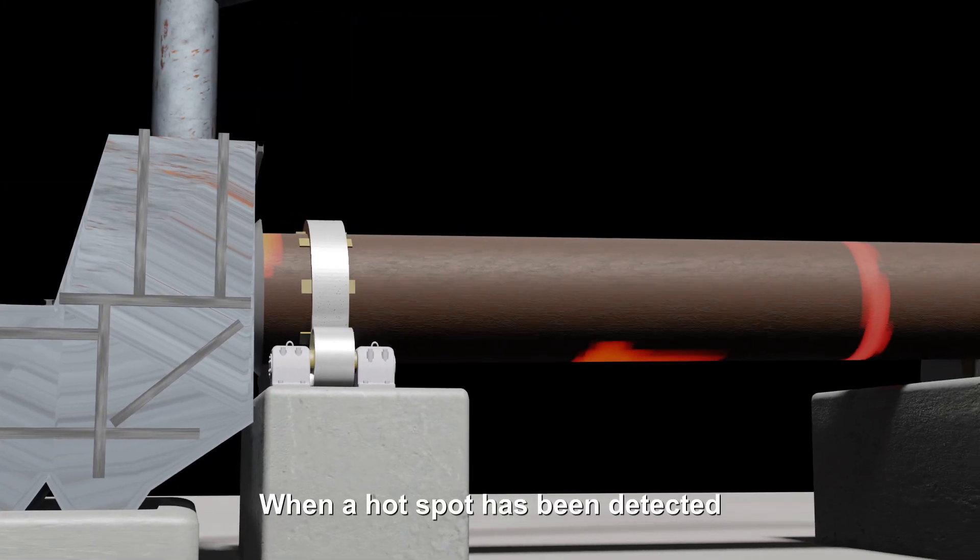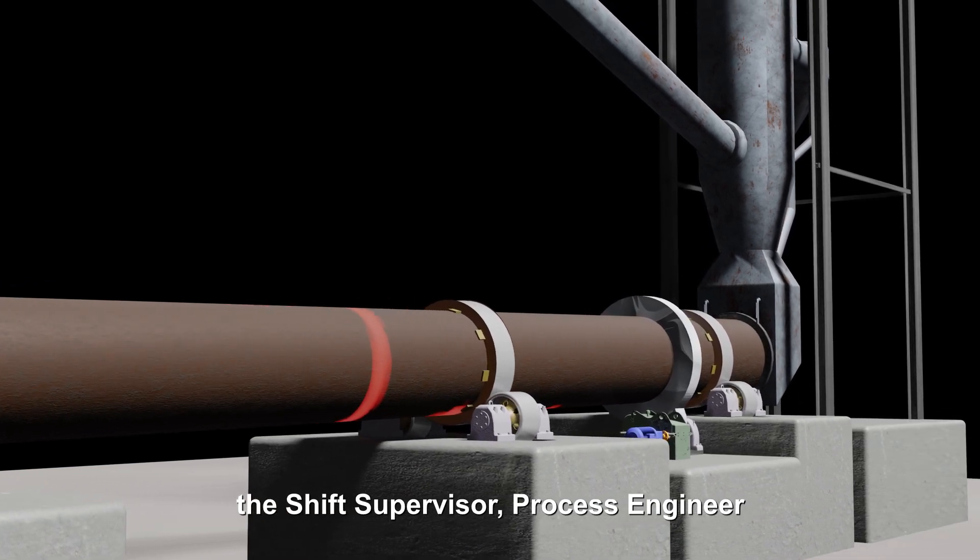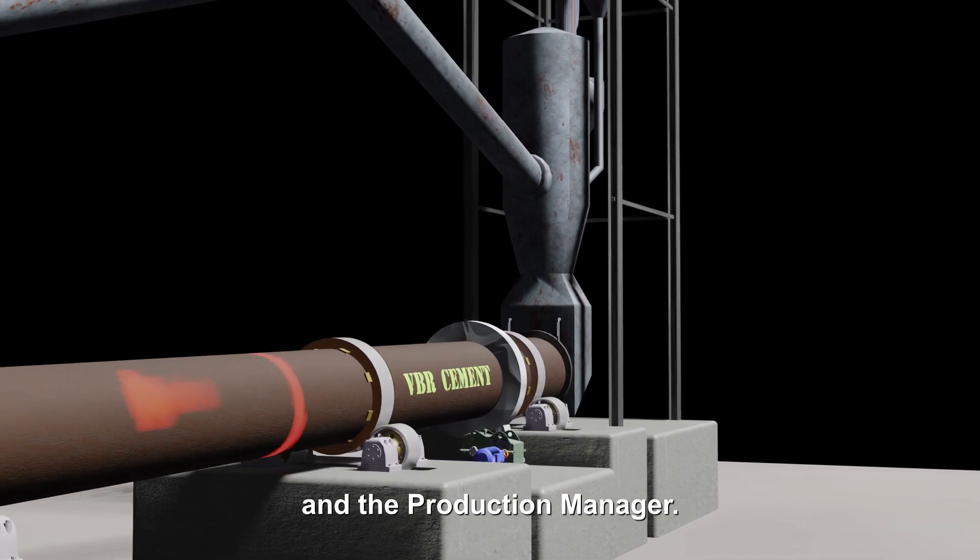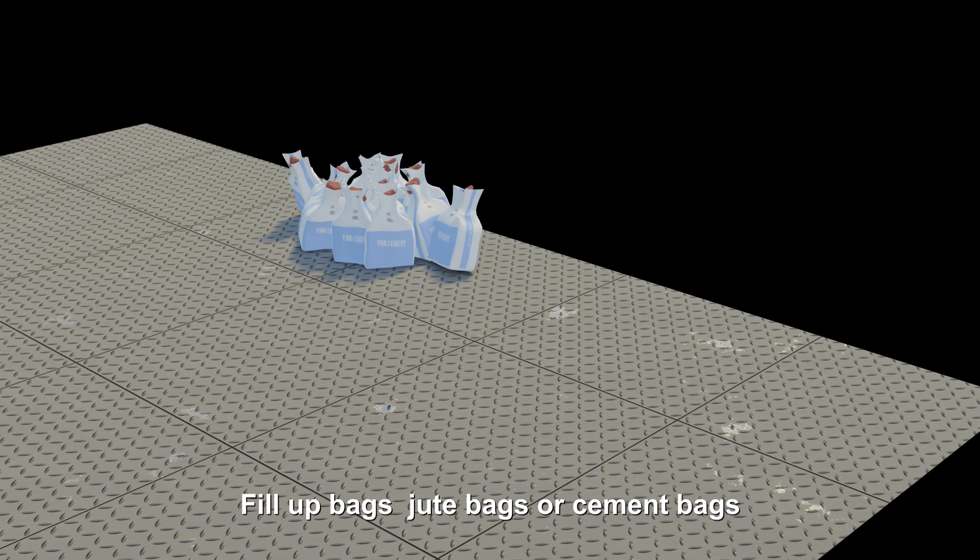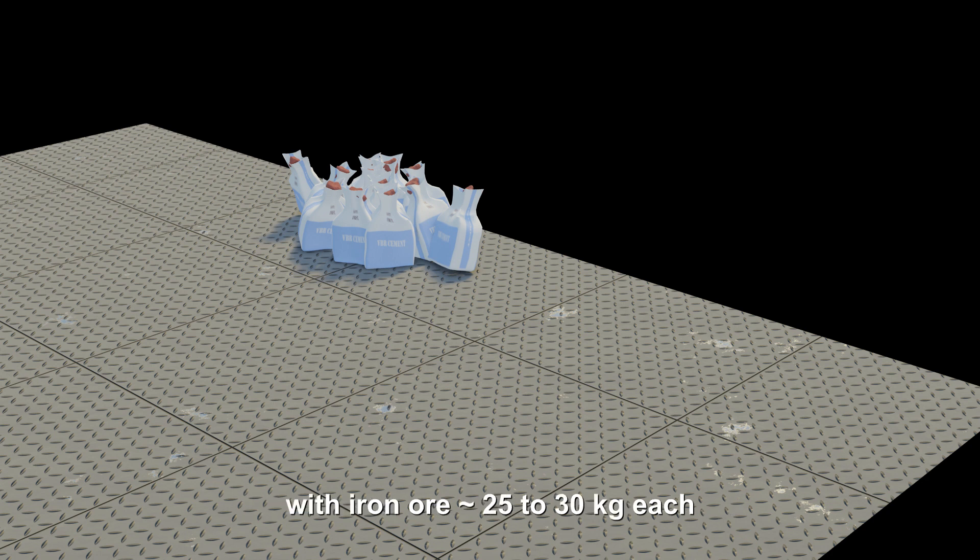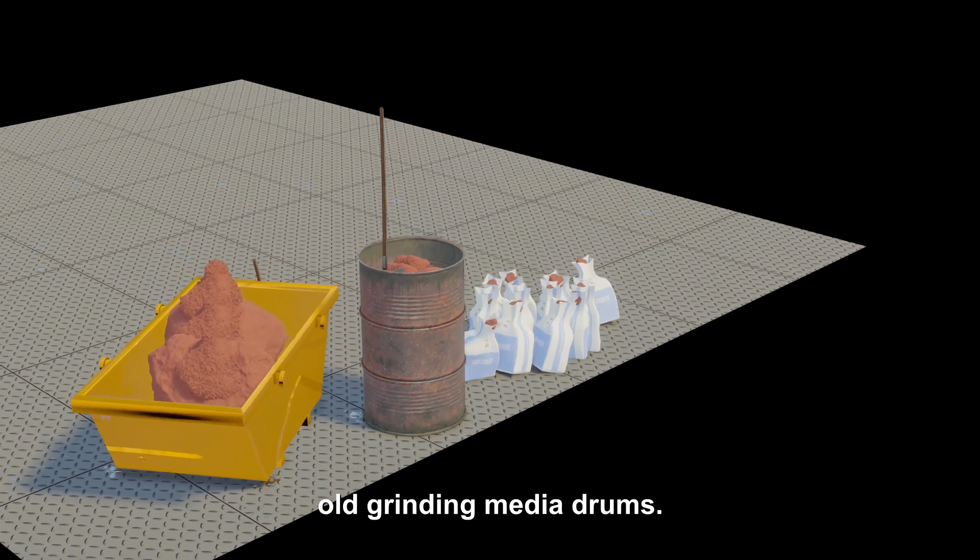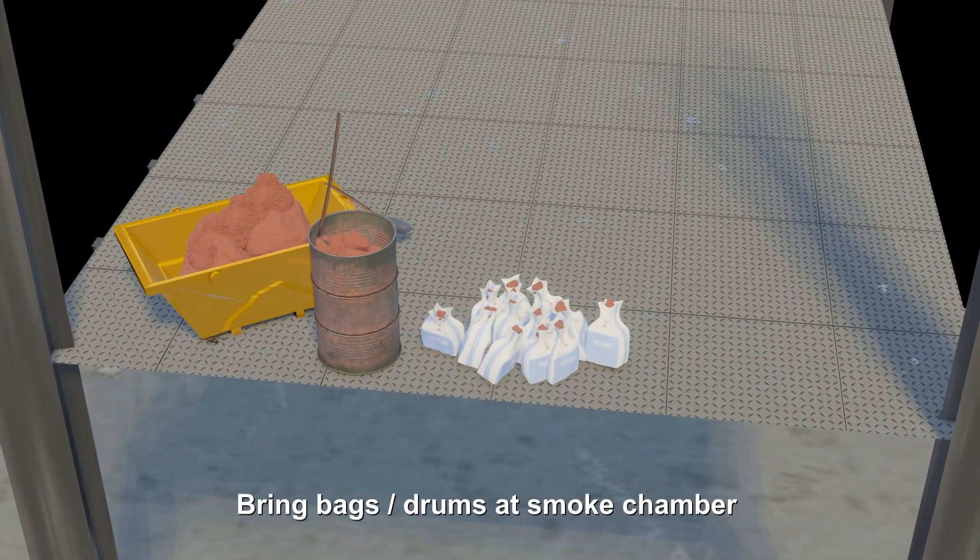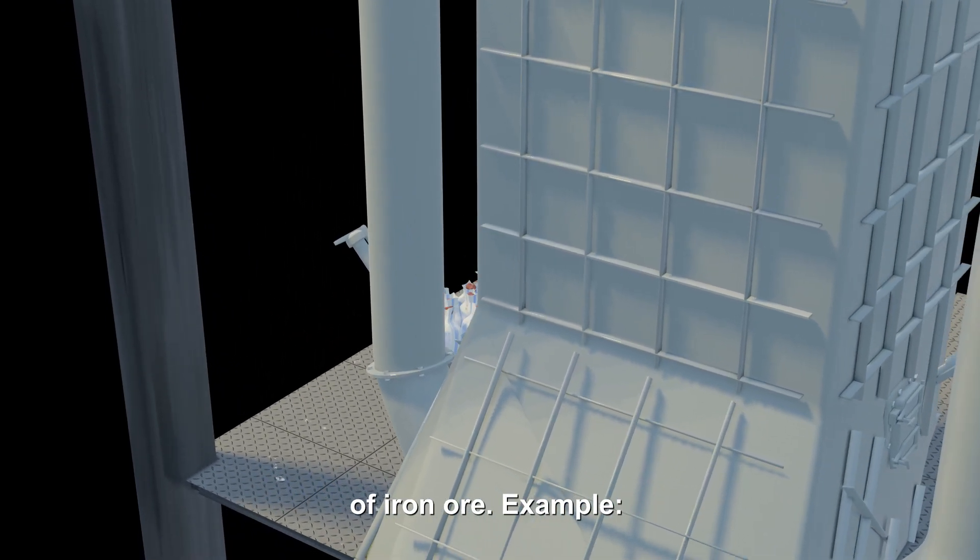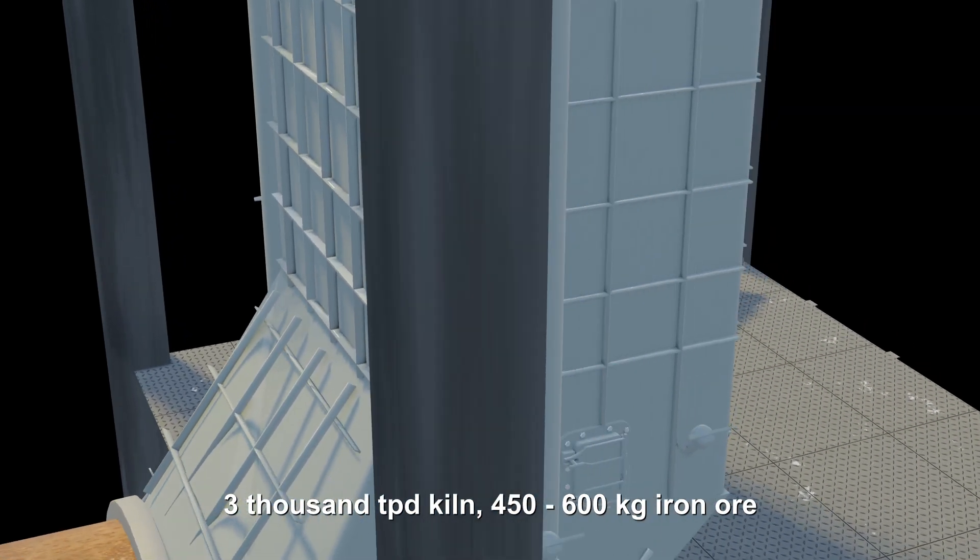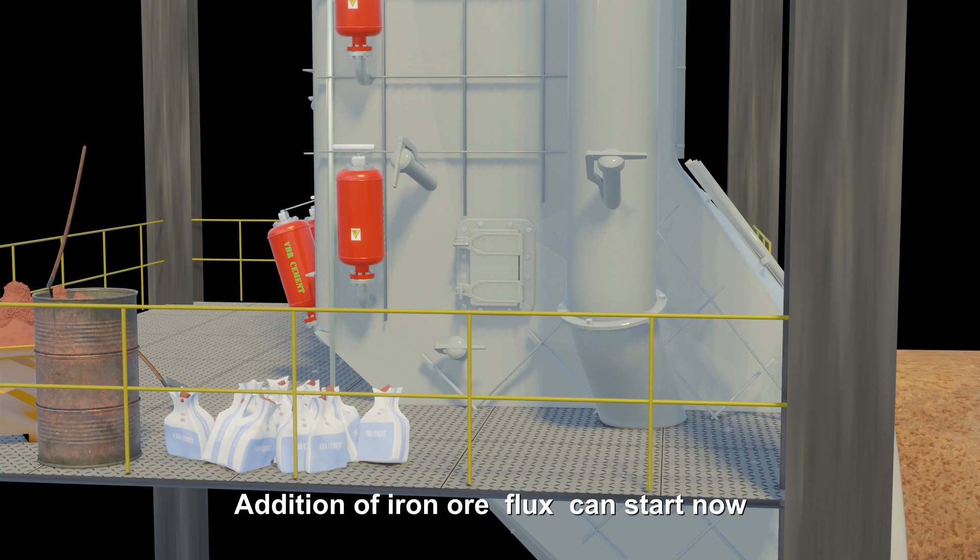When a hot spot has been detected, inform shift personnel of the procedure, specifically the central control room operator, the shift supervisor, process engineer, and the production manager. The director nominates a responsible to control the procedure. Fill up bags, jute bags or cement bags, with iron ore, 25 to 30 kilograms each, or use a skip bin, a dumpster, or old grinding media drums. Bring bags or drums at smoke chamber level on preheater platform. Prepare the equivalent of 15 to 20 percent of the kiln daily production rate in kilograms of iron ore. Example: 3000 tons per day kiln, 450 to 600 kilogram iron ore. Addition of iron ore flux can start now.